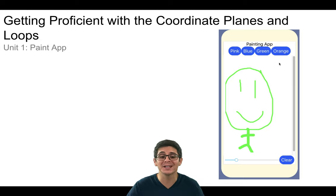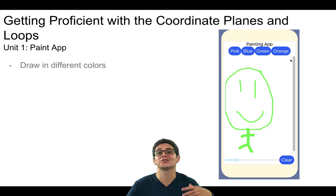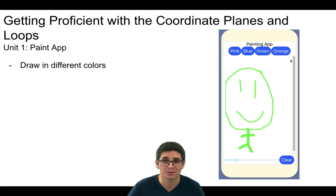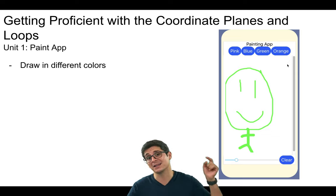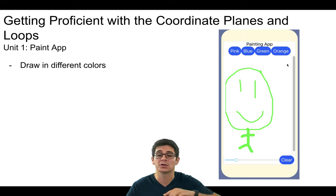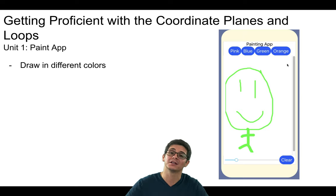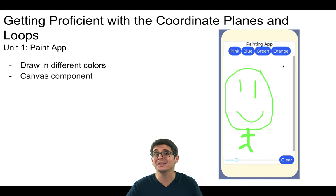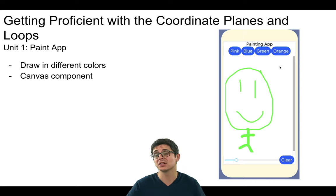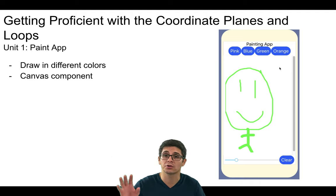The first one is this Paint app. In this Paint app, you'll be able to draw on the screen in different colors, and you can hit the clear button to wipe the screen clear. In it, we're going to be using the Canvas component, which is a component that allows us to draw on the screen.